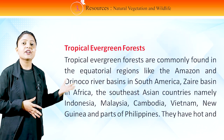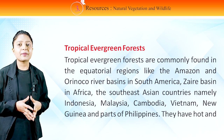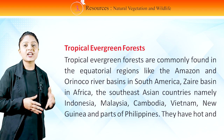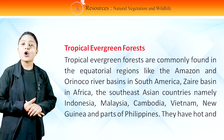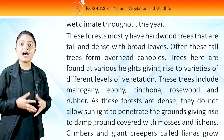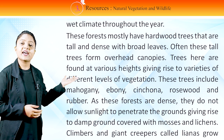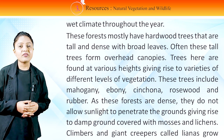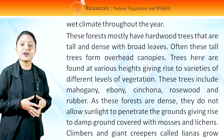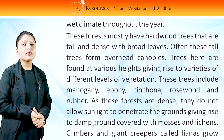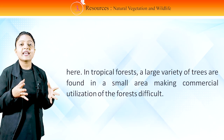Tropical evergreen forests are commonly found in the equatorial regions like the Amazon and Orinoco river basins in South America, the Zaire Basin in Africa, and Southeast Asian countries namely Indonesia, Malaysia, Cambodia, Vietnam, New Guinea and parts of Philippines. They have a hot and wet climate throughout the year. These forests mostly have hardwood trees that are tall and dense with broad leaves, and their tall trees often form overhead canopies. Trees are found at various heights giving rise to different levels of vegetation, including mahogany, ebony, cinchona, rosewood and rubber. As these forests are dense, sunlight cannot penetrate the ground, giving rise to damp ground covered with mosses and lichens. Climbers and giant creepers called Lianas grow here. A large variety of trees are found in a small area, making commercial utilization of the forest difficult.